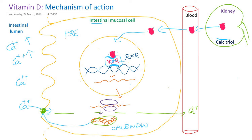Vitamin D, or its active form calcitriol, is essential for the absorption of dietary calcium. Without vitamin D or calcitriol, there is a deficiency of calcium. In children, this may cause rickets, and in adults it may cause osteomalacia. This is the mechanism of action of vitamin D in the intestinal mucosal cell.